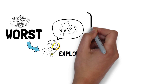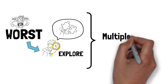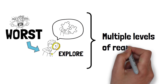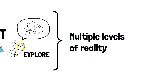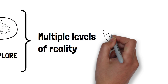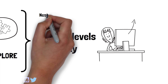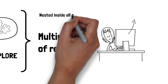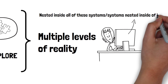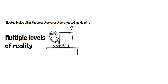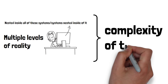This slide is an elaboration of what I was telling you earlier about the multiple levels of reality. The idea is that the thing that you see — in this particular schema, the computer — is nested inside all of these systems, or has other systems nested inside of it. And that's part of an indication of the complexity of things.